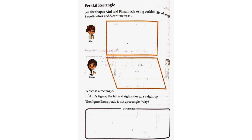Irkel Rectangle. See the shapes Atul and Binsa made using Irkel bits of length 8 cm and 5 cm, which is a rectangle. Atul's figure. In Atul's figure, the left and right sides go straight up.